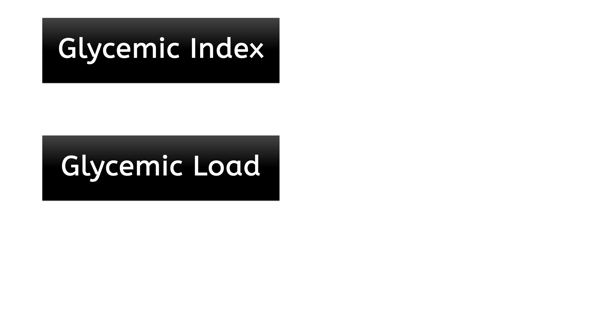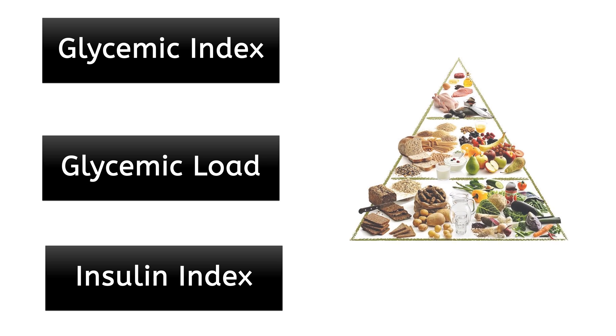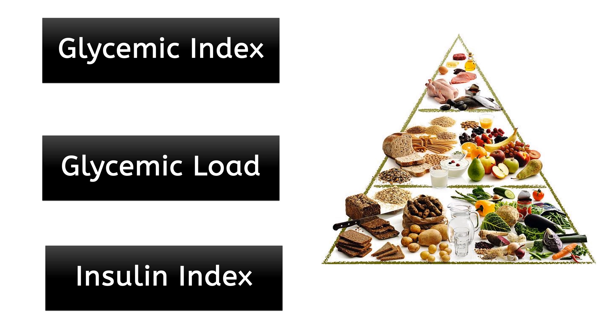Glycemic Index, Glycemic Load, and Insulin Index are commonly used terms when describing food items, either for dieting or in treatment of conditions like diabetes and obesity.